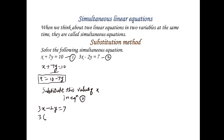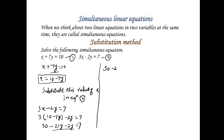Substituting x equals 10 minus 7y into equation 2: 3 times (10 minus 7y) minus 2y is equal to 7. Now we multiply through the bracket: 3 times 10 is 30, minus 3 times 7y is 21y, minus 2y is equal to 7.